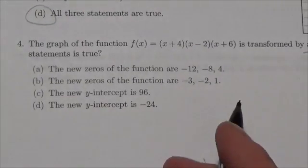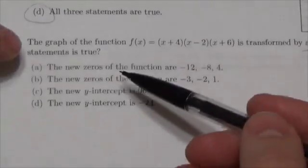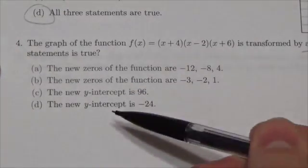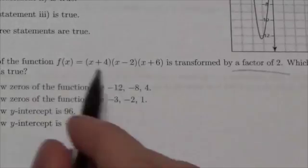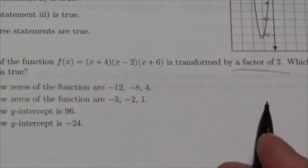So which of the following can be true here? We're going to be given information about the zeros and the y-intercepts. So the thing to do is to go back to the original and see if we can identify the zeros and the y-intercepts that we start off with.